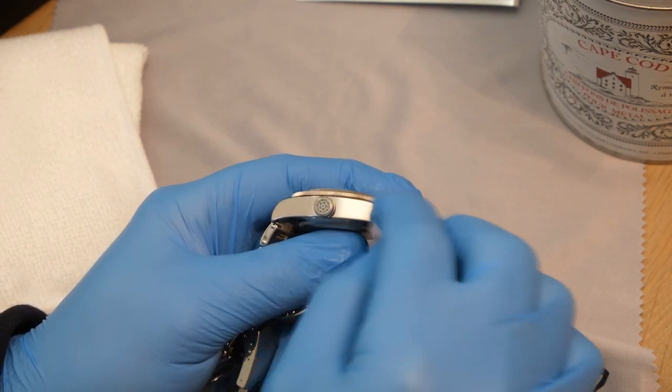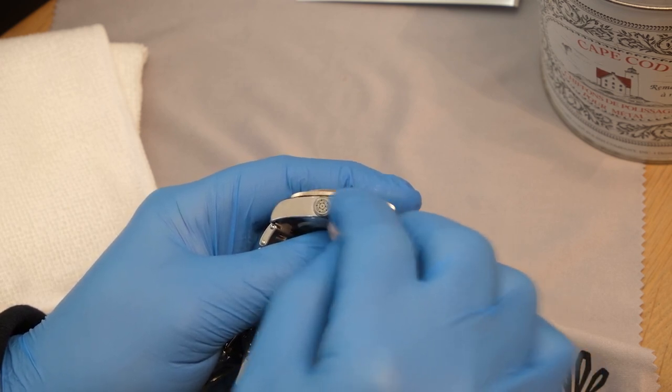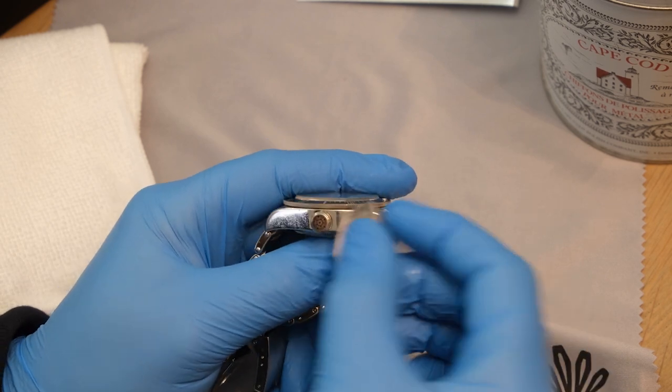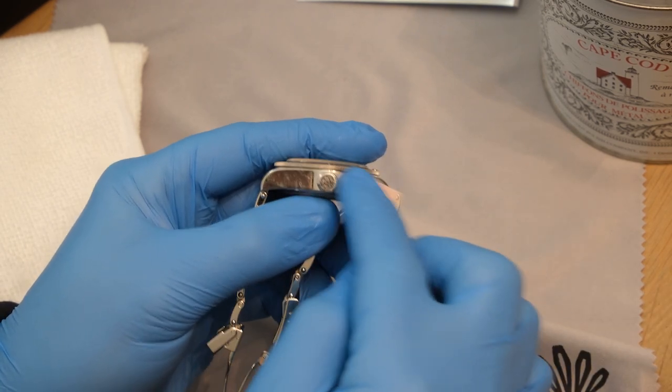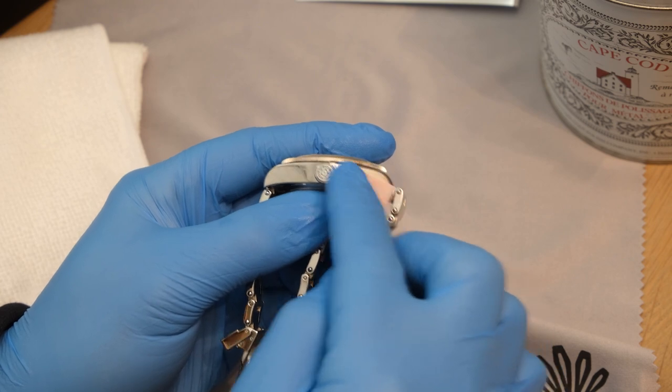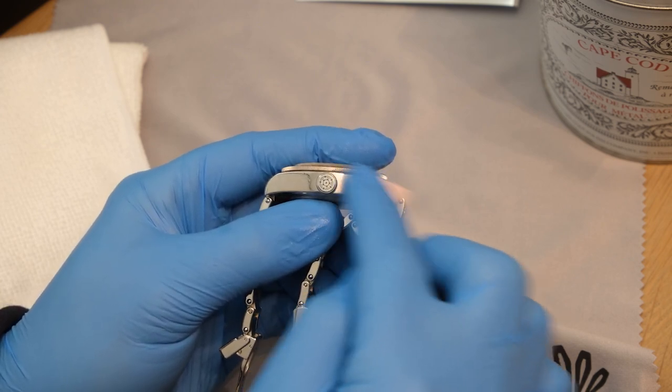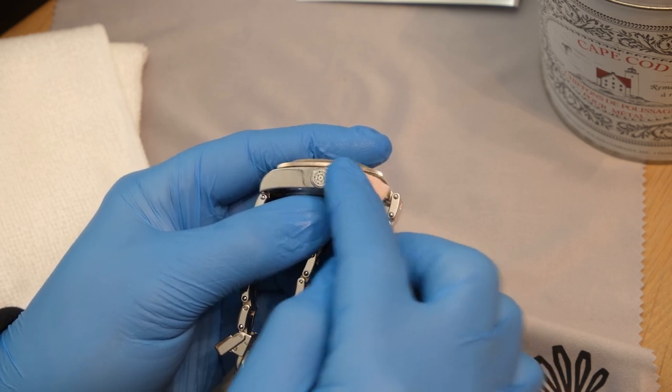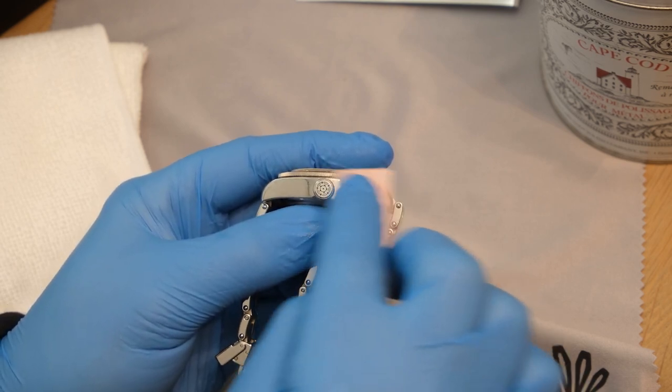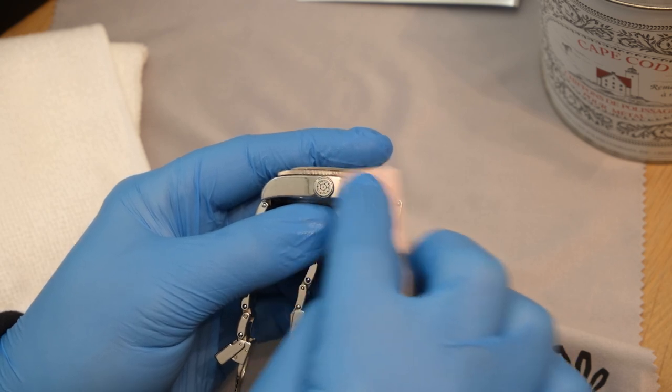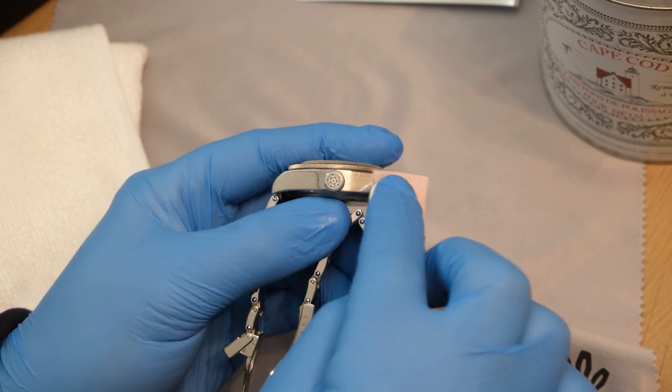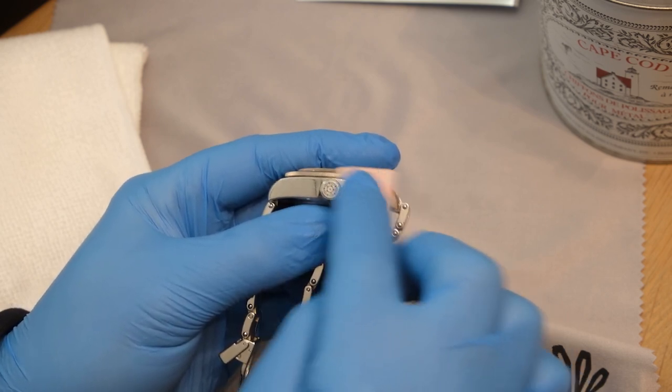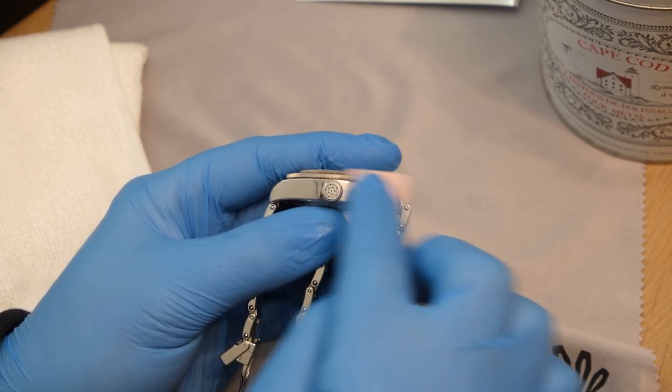I'm using a medium amount of pressure, not particularly light, but I'm not pushing down hard at all. Now I don't want to use this on any of the brushed surfaces because this will unbrush the brushing. Of course, you can just use a Scotch-Brite pad or something like that to bring the brushed areas back to life again.